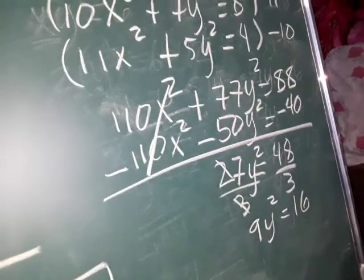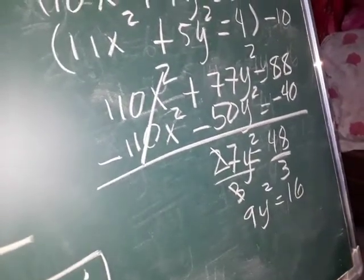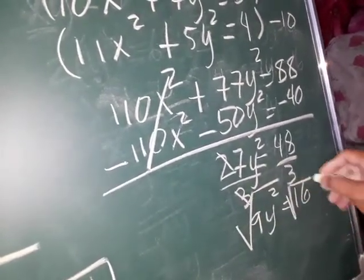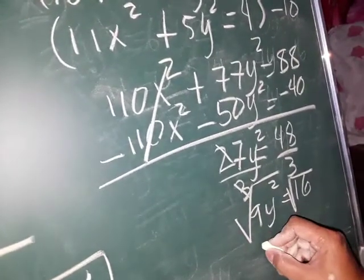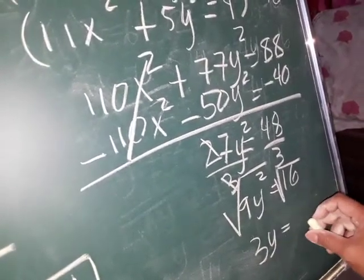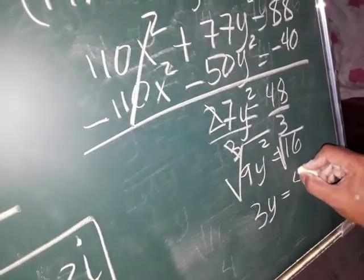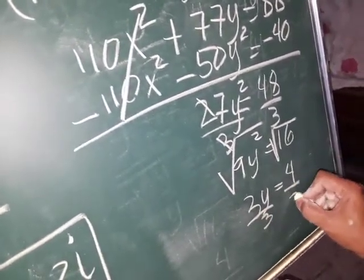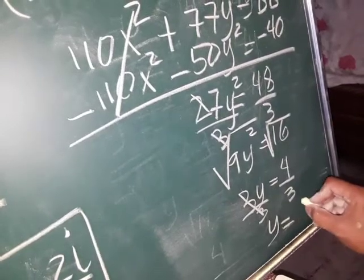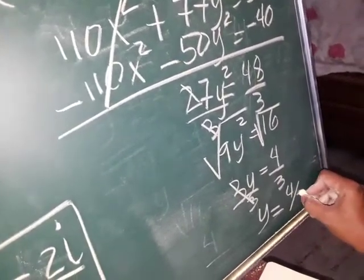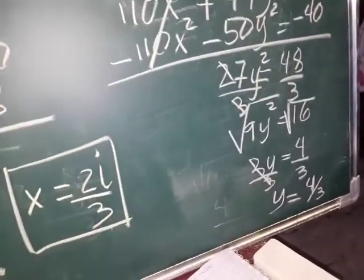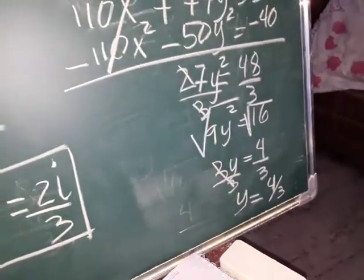So 9y squared is equal to 16. Since 9 is a perfect square, put a radical sign on both sides. Square root of 9 is 3, square root of y squared is y, is equal to square root of 16 which is 4. Then divide by 3 on both sides — cancel. So y is equal to 4 over 3. Our final answers are x is equal to 2i over 3 and y is equal to 4 over 3.